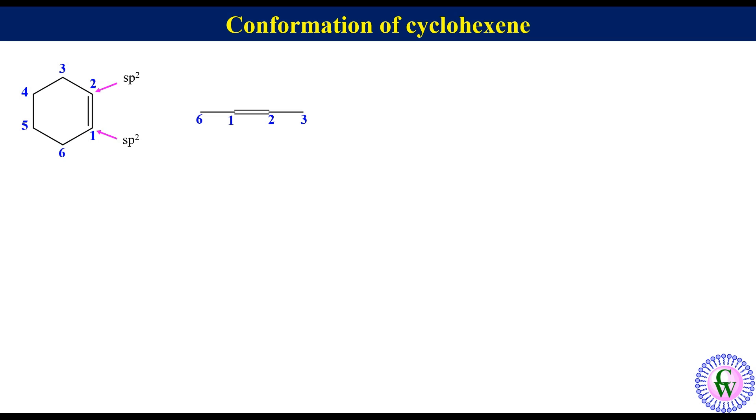This confirmation is called half-chair conformation. Like cyclohexane, it can also undergo ring flipping to generate another half-chair conformation with the same energy.